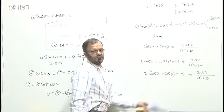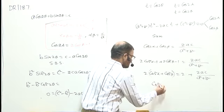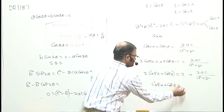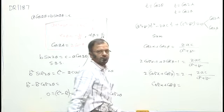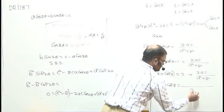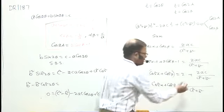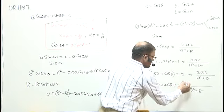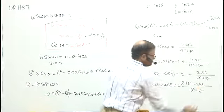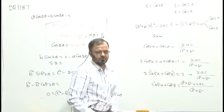Dividing both sides by 2: cos²α + cos²β. Taking LCM on the right side with (a² + b²), this becomes (a² + b² + 2ac) / (a² + b²). Hence, this is the answer to this question.